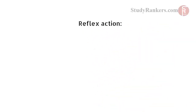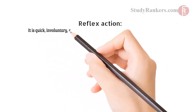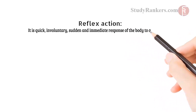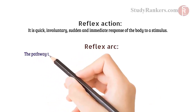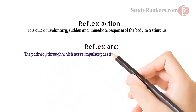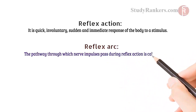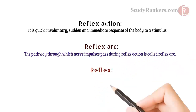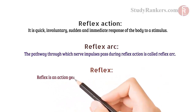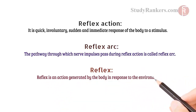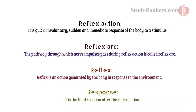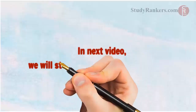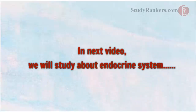Reflex action: a quick, involuntary, certain and immediate response of the body to a stimulus. Reflex arc: the pathway through which nerve impulses pass during reflex action. Reflex: an action generated by the body in response to the environment. Response: the final reaction after the reflex action. In the next video, we will study about the endocrine system. Thanks for watching. I'll see you next time.